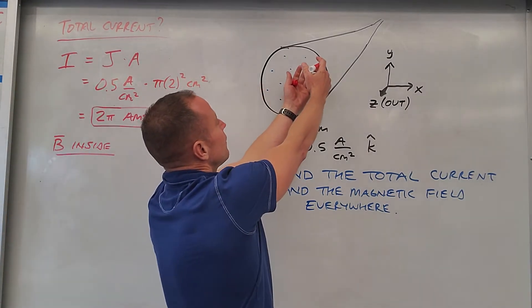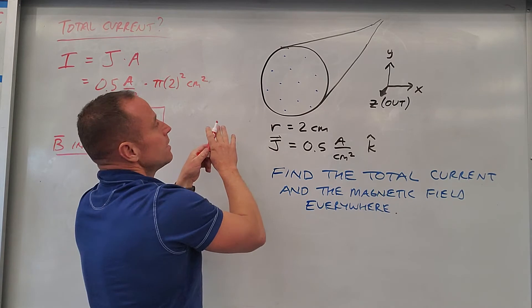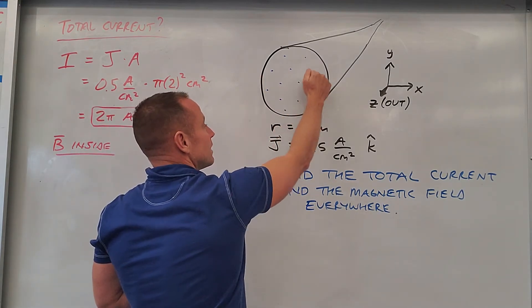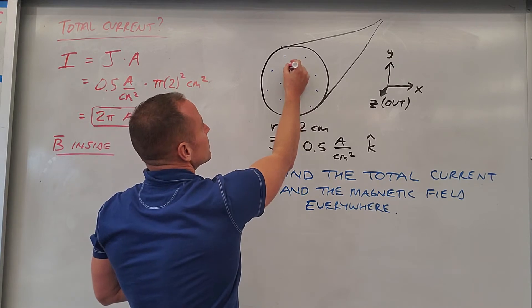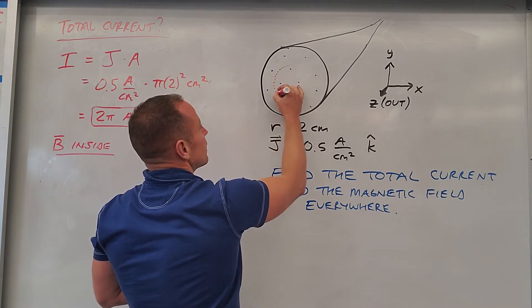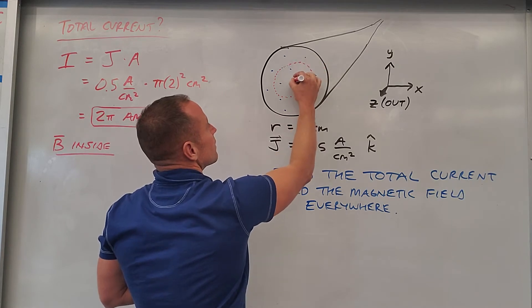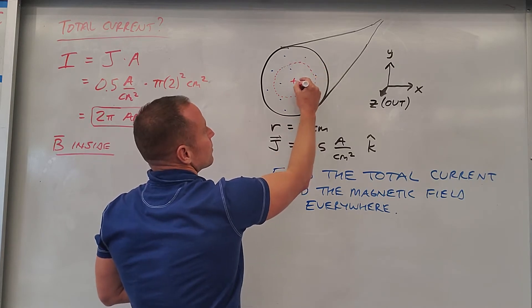What you want to do is you've got all this current coming toward you, so the field is going to swirl around it like this. What we want to do is make our Amperian loop